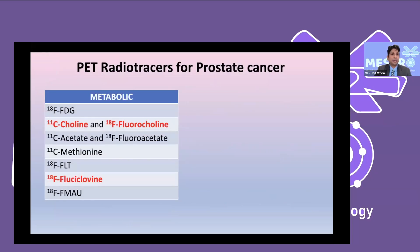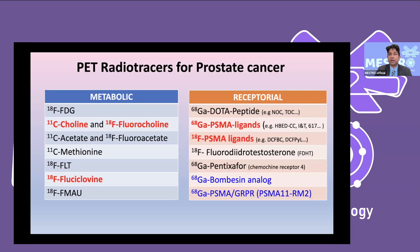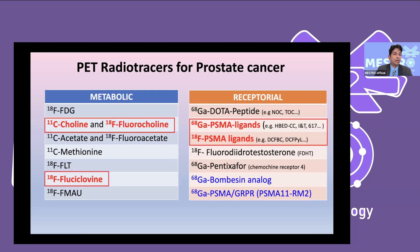Among metabolic markers, FDG is less useful in prostate cancer due to low uptake, which led to the development of other radiopharmaceuticals such as carbon-11-choline or fluorine-18-fluorocholine, addressing amino acid and fatty acid synthesis. A remarkable development came when targeting the receptor membrane with gallium-PSMA or fluorine-18-PSMA.